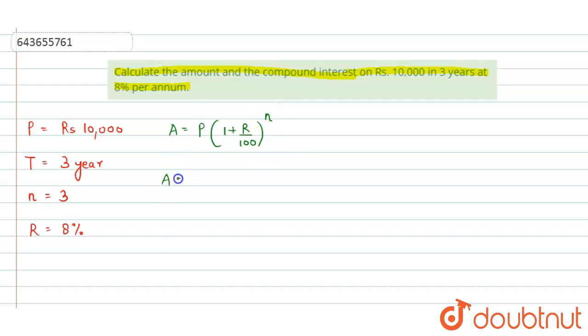Putting in the given values: Amount = 10,000(1 + 8/100)^3.